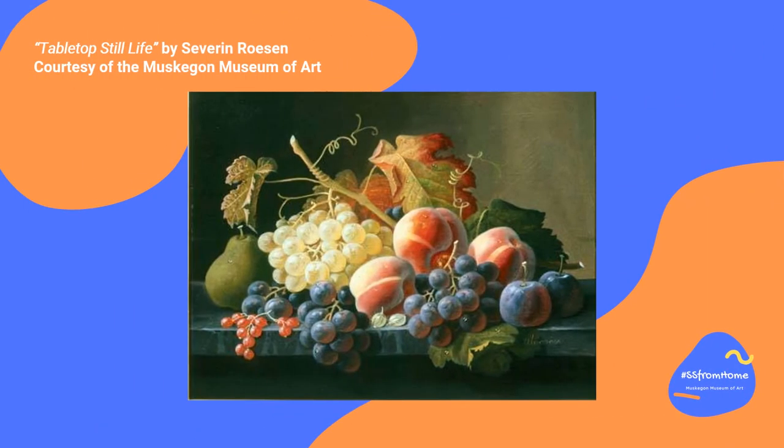This is a perfect example of a still life here at the Muskegon Museum of Art. It's even called Tabletop Still Life. Tabletop Still Life was painted by an artist named Severin Rosen in the 1850s, so a very long time ago. Rosen was known for painting still lives during his lifetime, and many families bought his paintings to be displayed in their homes. His artwork was nicknamed Dining Room Pictures because families often displayed artwork like this in their formal dining rooms.